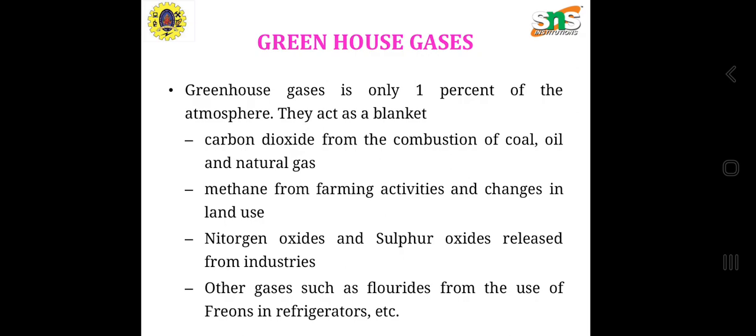Carbon dioxide contaminants from these pollutants cause greenhouse gases. Greenhouse gases are only one percent of the atmosphere but act as a blanket, not allowing unwanted UV radiation to leave the earth. Sources include carbon dioxide from combustion of coal, oil and natural gas, methane from farming activities and changes in land use, nitrogen oxides and sulfur oxides released from industries, and other gases such as fluorides from the use of refrigerants.